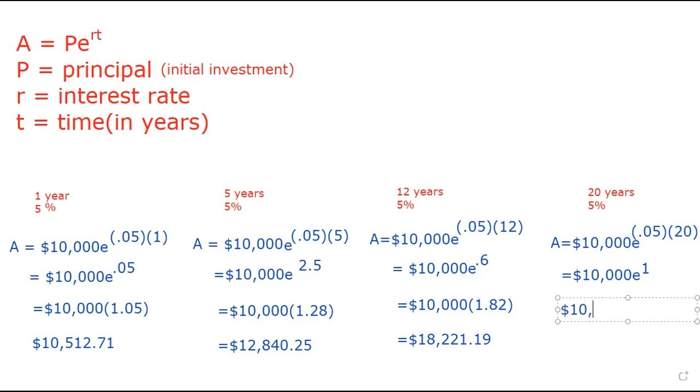Now that's going to be 10,000 times 2.718. We're rounding this as closely as we can. And in the end, after we multiply all of this together, over this 20-year period, we are going to have $27,182.82.